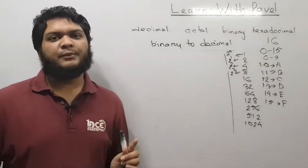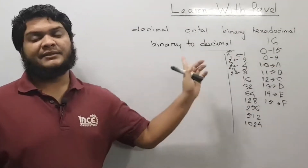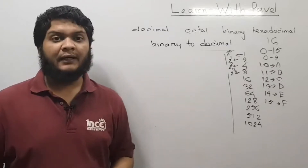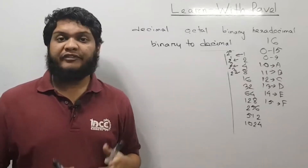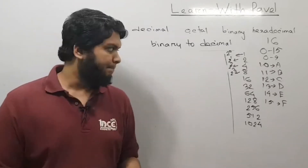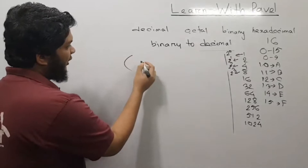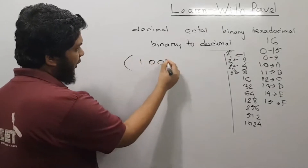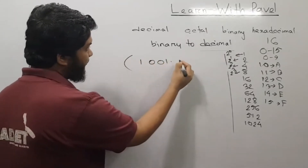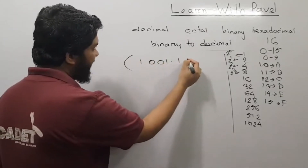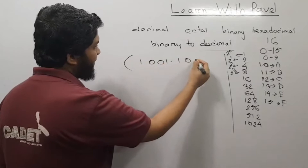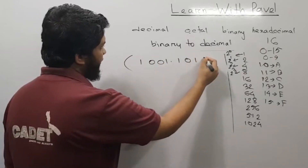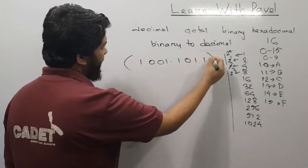I am going to learn how to connect with decimal equivalents to convert. Let's put together, from a second time: zero, zero, one point, one, zero, one, one.